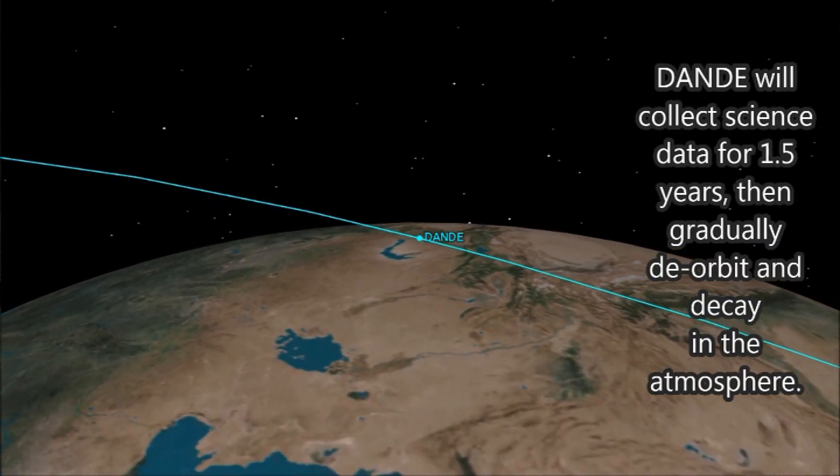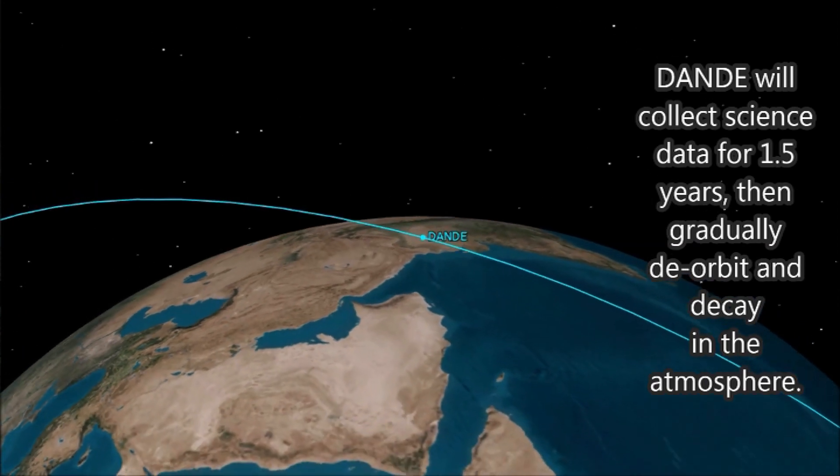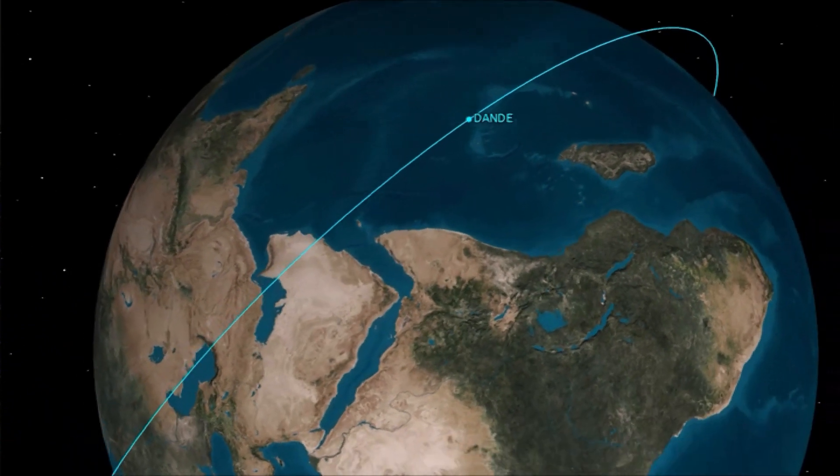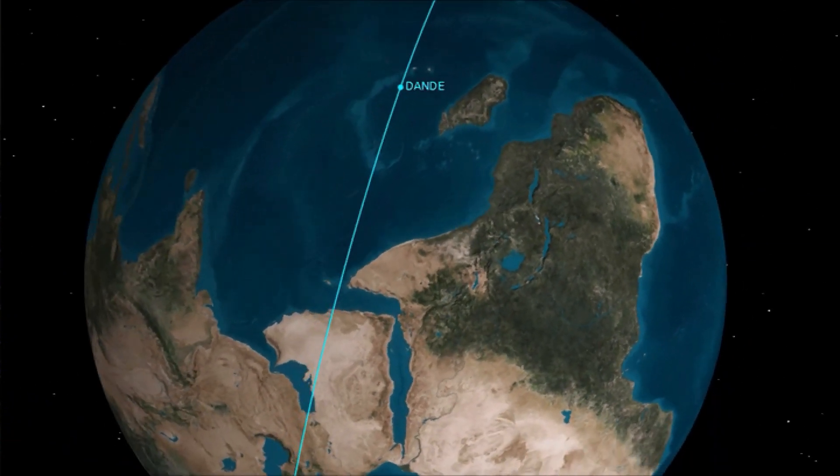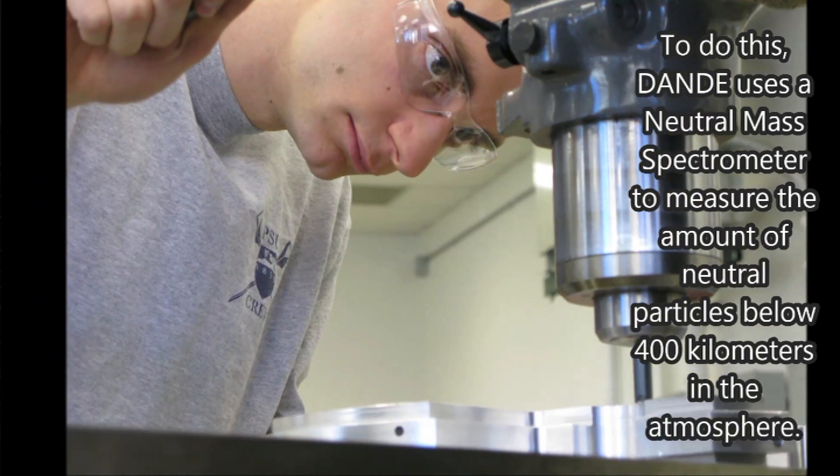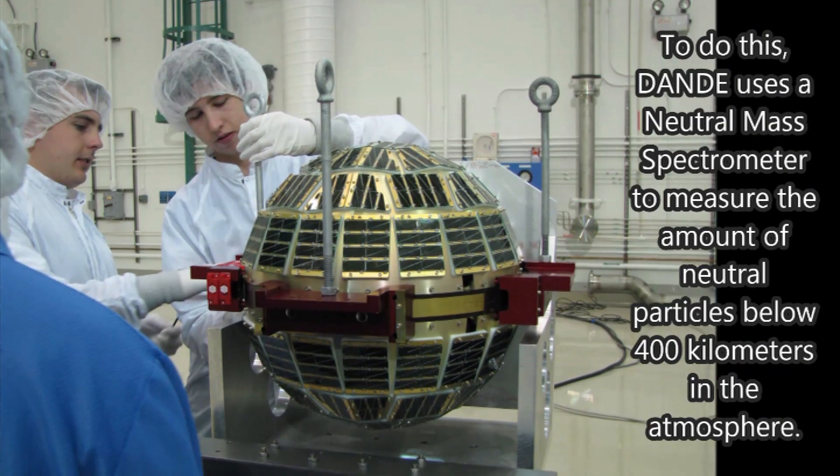That drag is just molecular particles like the air we experience down here, except it's much sparser up there. It's going to be in orbit for a year and a half looking at drag using a couple different instruments, which we call ACC, the accelerometer, and NMS or wind temperature spectrometer.